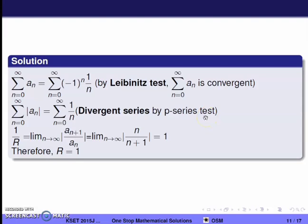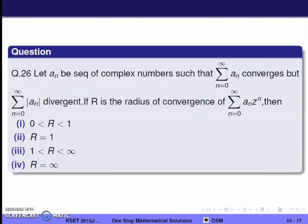Now we find the radius of convergence using the formula: 1/r = lim(n→∞) |a_{n+1}/a_n|. With a_n = 1/n and a_{n+1} = 1/(n+1), we get 1/r = lim(n→∞) |n/(n+1)| = 1. Therefore r = 1. The correct option is r = 1, so option 2 is correct.